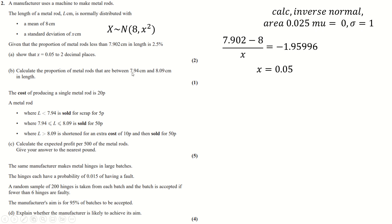And then you calculate the proportion between this and this. So that's the probability of being in between with this normal distribution where we now know the standard deviation.